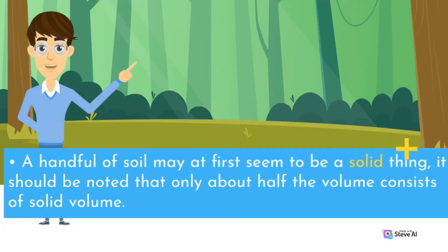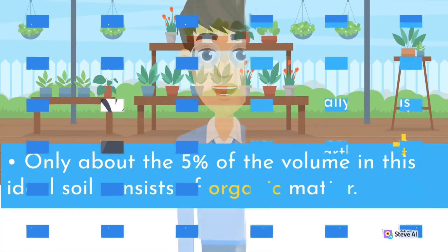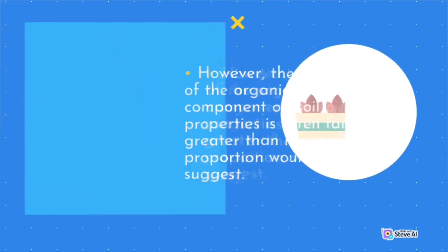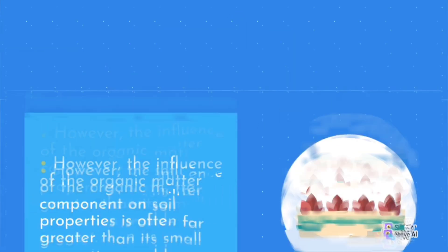A handful of soil may at first seem to be a solid thing. It should be noted that only about half the volume consists of solid material. Of the solid material, typically most is mineral matter derived from the rocks of the earth's crust. Only about 5% of the volume in this ideal soil consists of organic matter. However, the influence of the organic matter component on soil properties is often far greater than its small proportion would suggest.